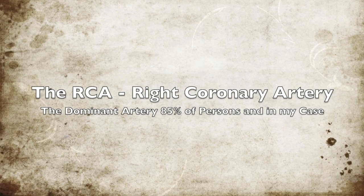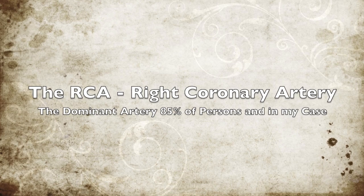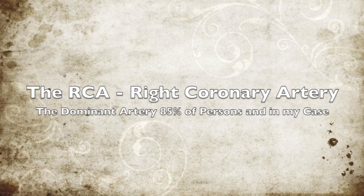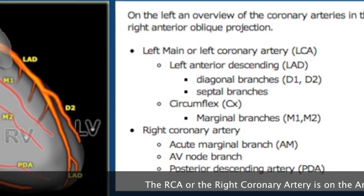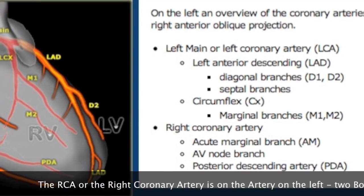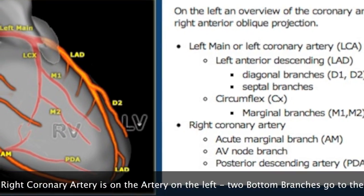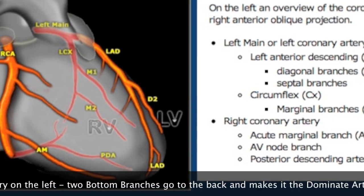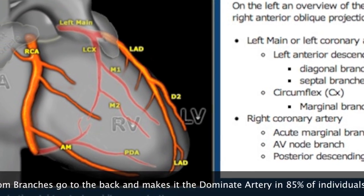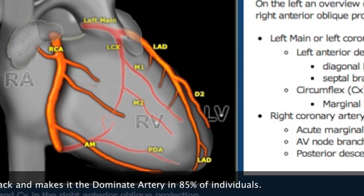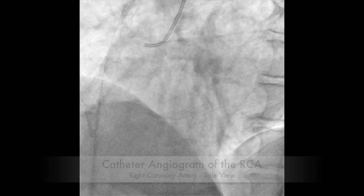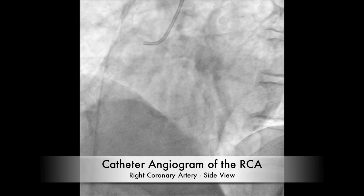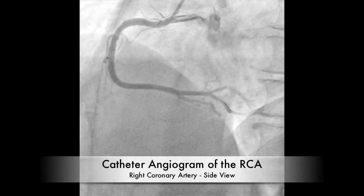Now we're going to look at the right coronary artery. The RCA is dominant in 85% of people in the world. The RCA is the artery on the left, and we see it has two branches that go back — that's what makes it the dominant artery in 85% of individuals. In the image you can see a PDA and an AM.